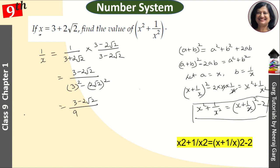When we solve this, this becomes 3 minus 2 root 2. 3 square is 9, and 2 root 2 square, 2 root 2 into 2 root 2, so 2 into 2 is 4, and root 2 into root 2 is 2, so this becomes 8. So the value of 1 upon x comes out to be 3 minus 2 root 2, 9 minus 8 is 1.